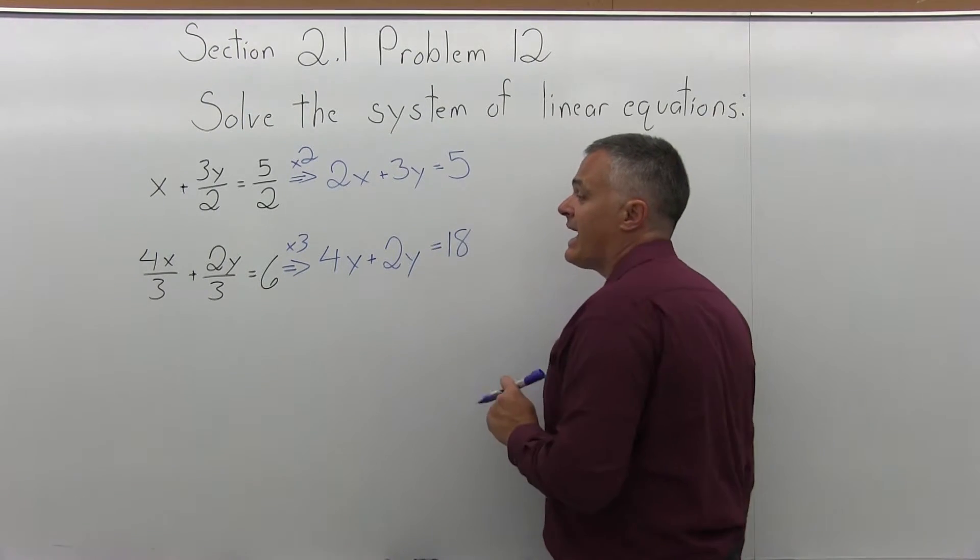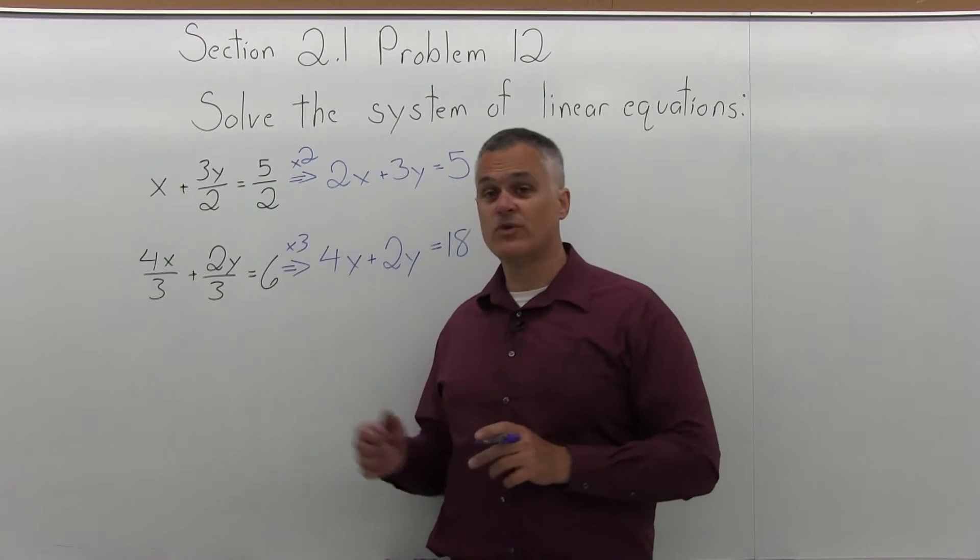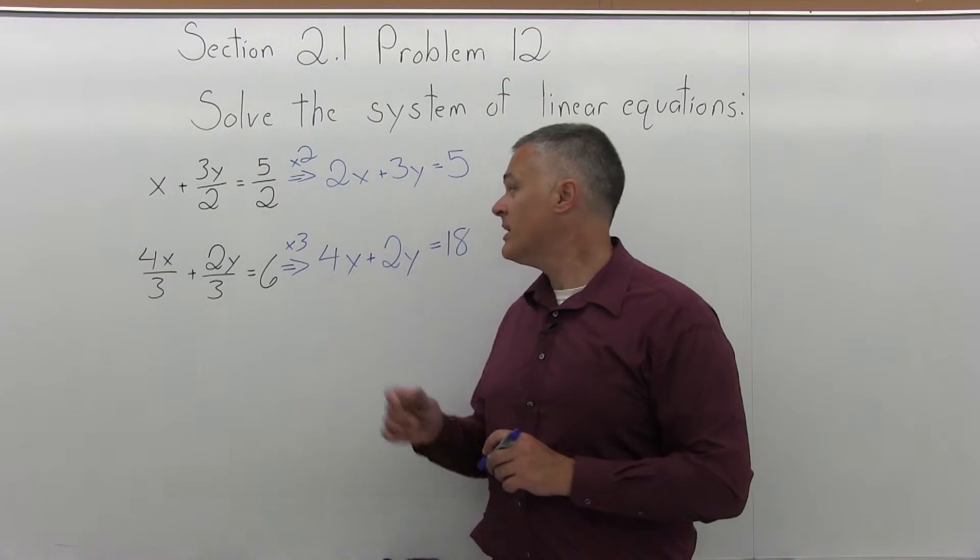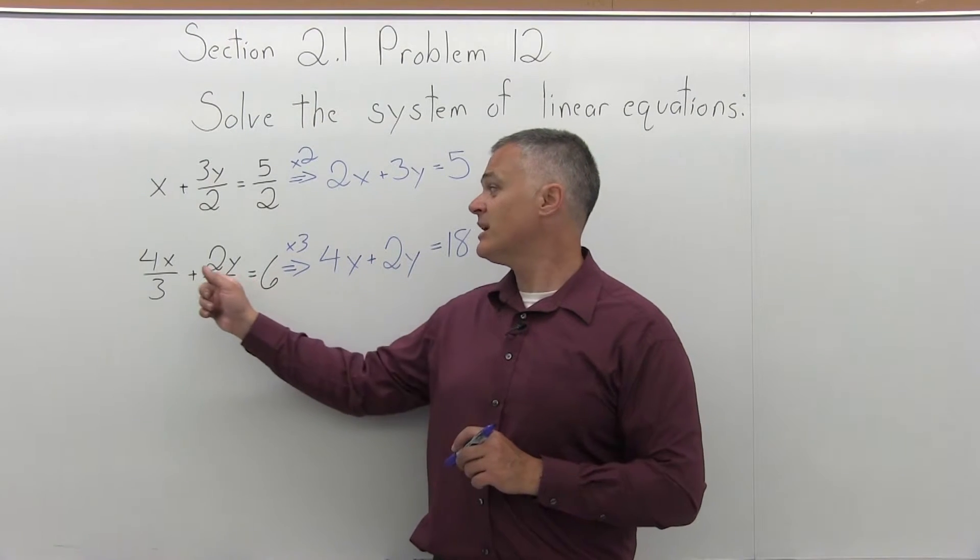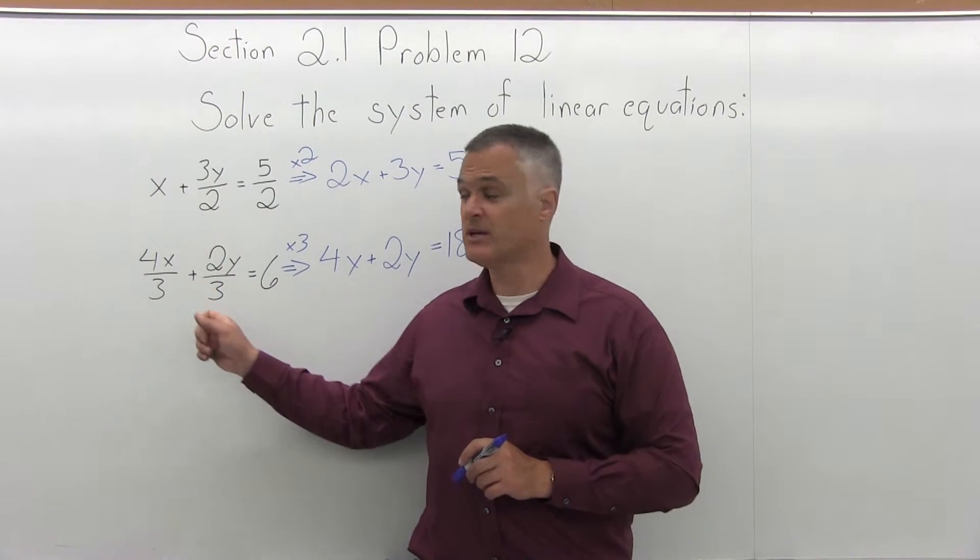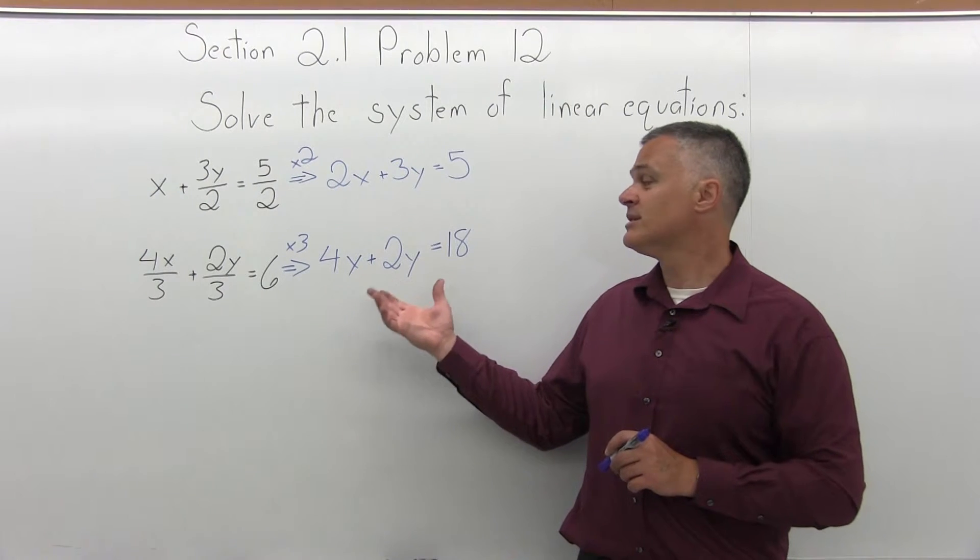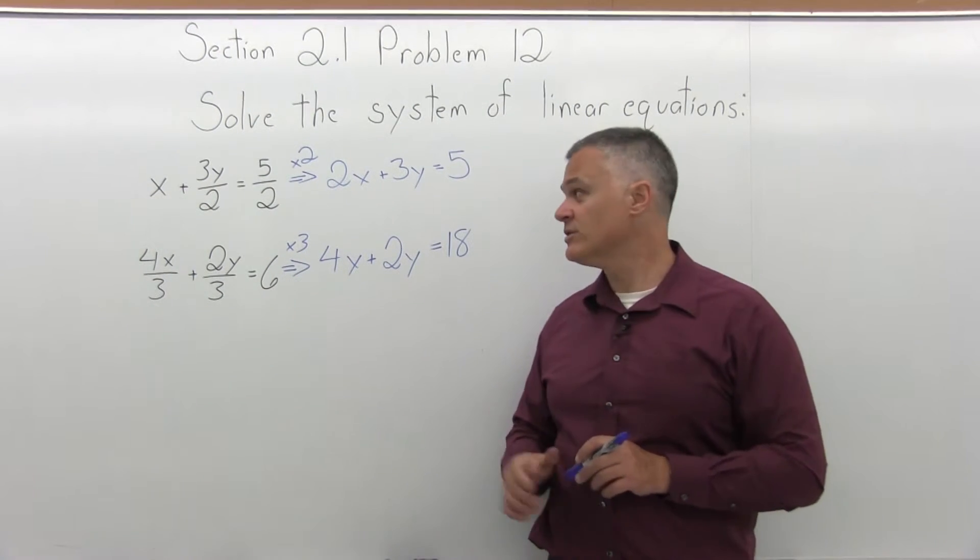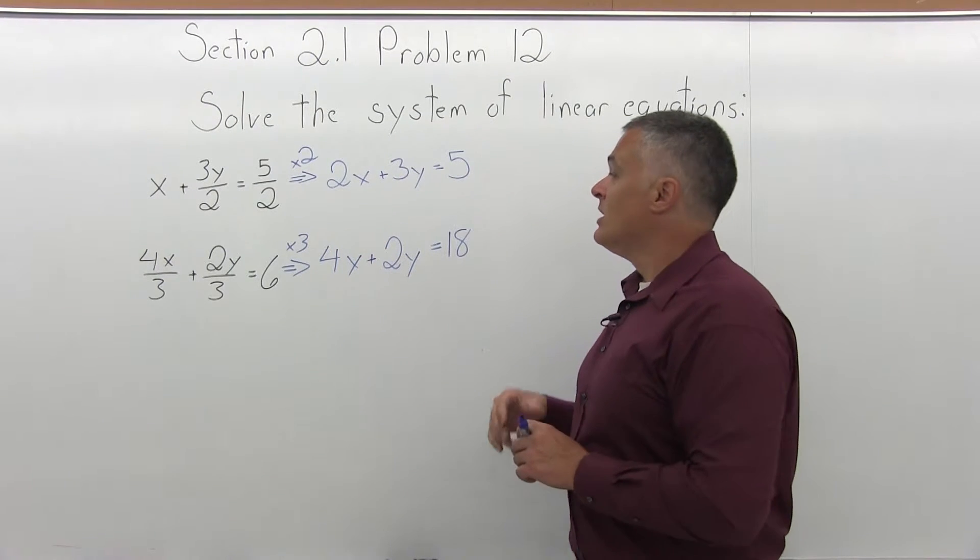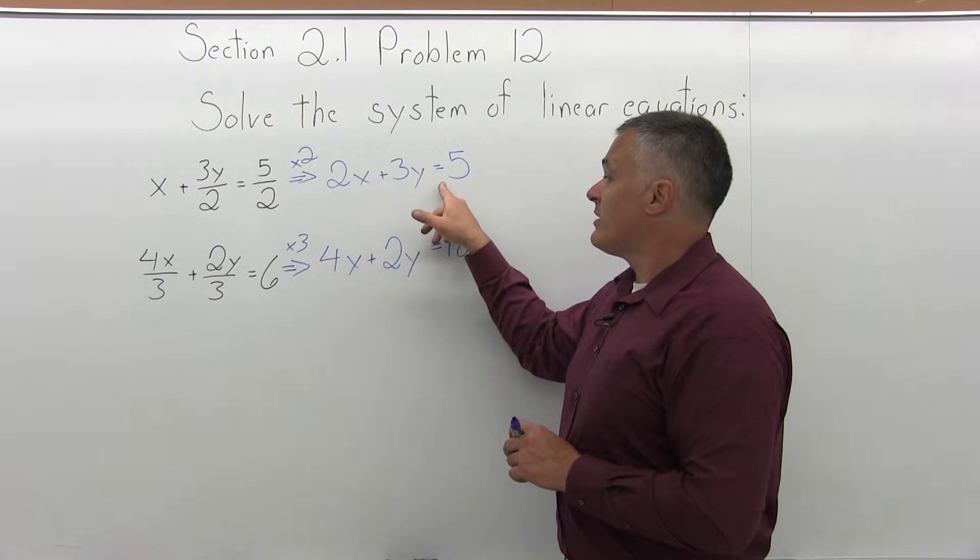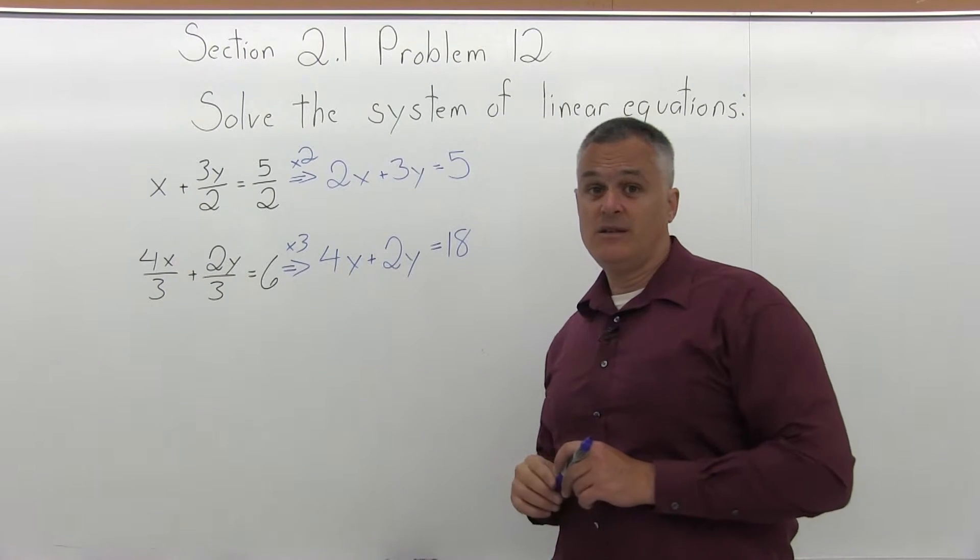So now what I have is the same equations written in a different form. The answer for the equations written without the denominators will be the same answer as the equations written with the denominators. But without the denominators, the equations are much easier to work with. So you can just pretend this is the starting point of the problem. So I have 2x plus 3y equals 5, and 4x plus 2y equals 18.